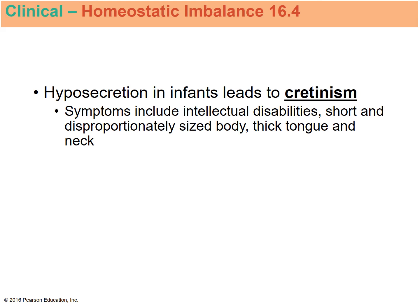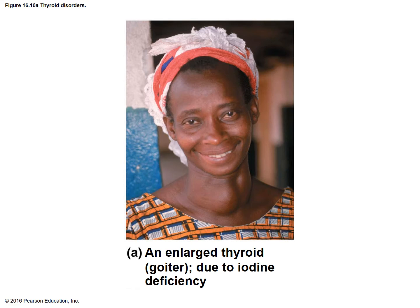Hyposecretion of thyroid hormone in infants can lead to cretinism, which can affect intellectual abilities and body proportions. A picture of disorders shows a woman with enlarged swelling in her neck — that is the goiter due to the enlarged thyroid.